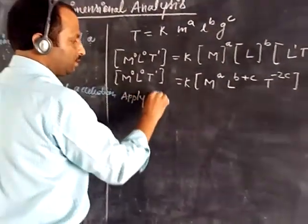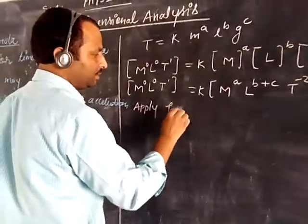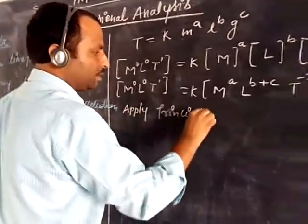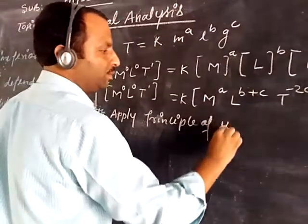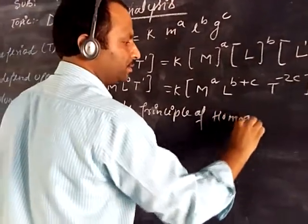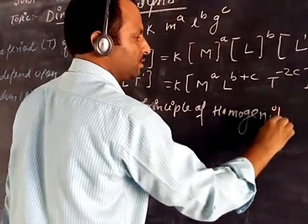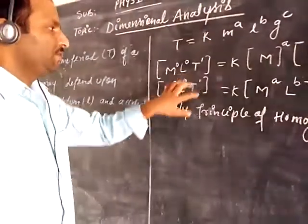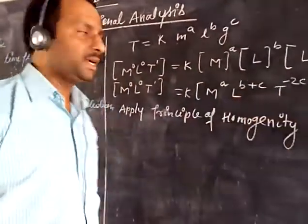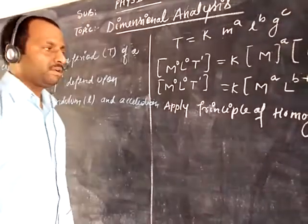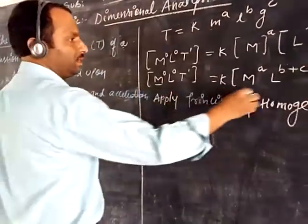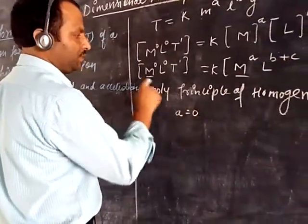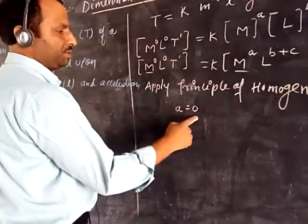Applying the principle of homogeneity. The principle of homogeneity says that if the left hand side is equal to the right hand side, then their powers are equated. So equating the powers of M: the power of a on the right side equals 0 on the left side, so a will become 0.